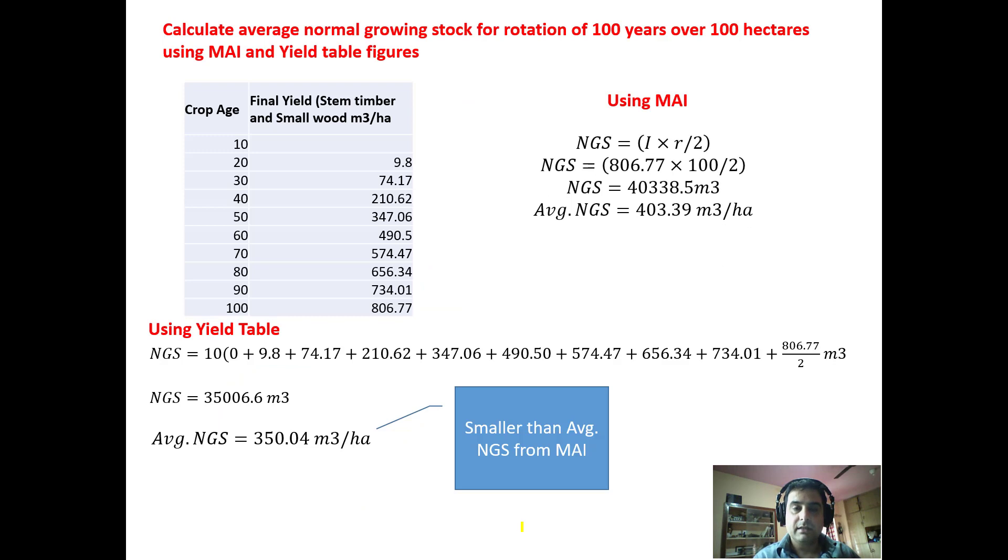Now we have a comparison in the form of an illustration using both methods. These are the figures that are available from the yield table. Using the MAI method, normal growing stock equals I × R. I here is the final age class which we harvest at the end of the growing season, which is 806.77. R is 100/2. So we get 403.39 cubic meters per hectare.